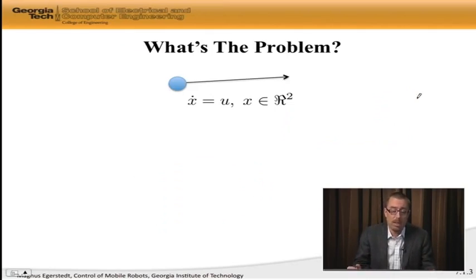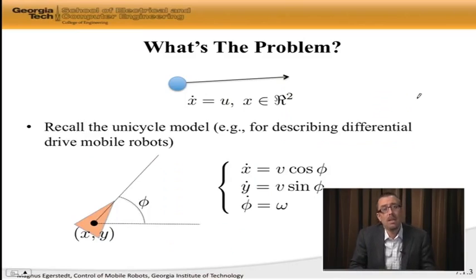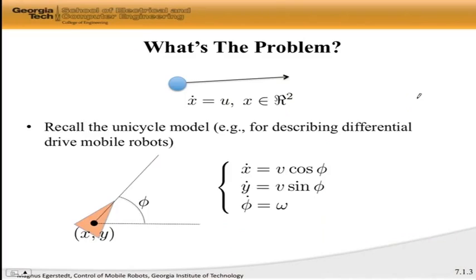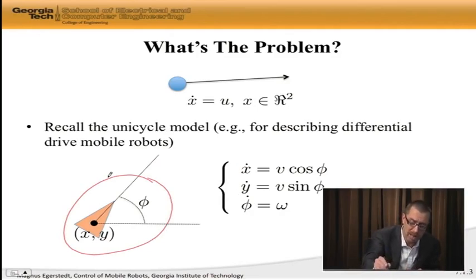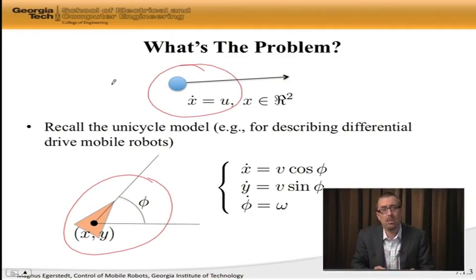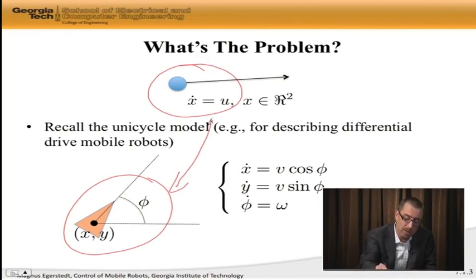The problem, of course, is that we have the point mass. And then, we're using a unicycle model for actually describing the robot, where x dot is v cosine phi, where v is the speed, and phi is the heading. Y dot was v sine phi, and phi dot was equal to omega, where omega was the angular velocity. Well, this robot, or this model, doesn't act like x dot is equal to u. And somehow, for what we've done during the last couple of modules to be relevant, we need to make these two models actually coexist peacefully.